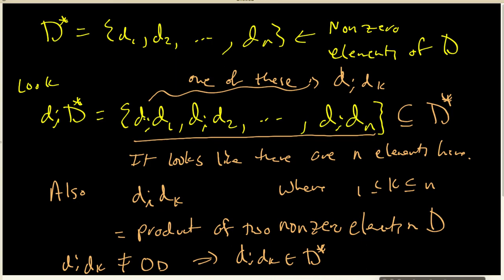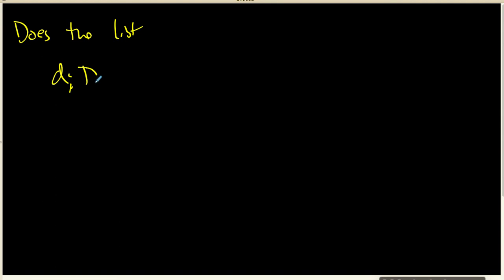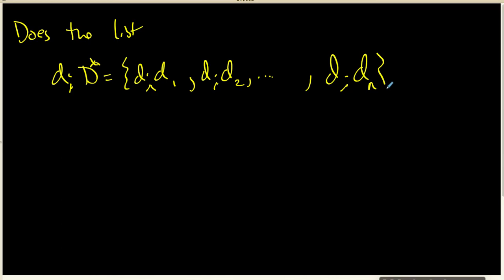The real question is simply: are there any duplicates? Because if I've got a set of n objects that lives inside another set of n objects, then one of these guys has to equal the other and we'll be done. So let's see whether or not D_i times D* can have duplicates. Does the list D_i·D_1, D_i·D_2, all the way up to D_i·D_n have duplicates?